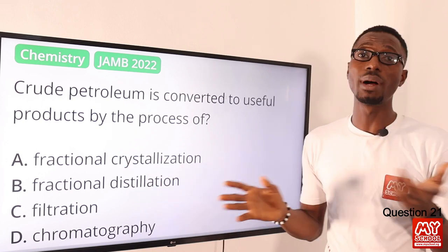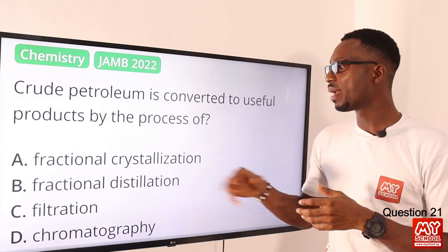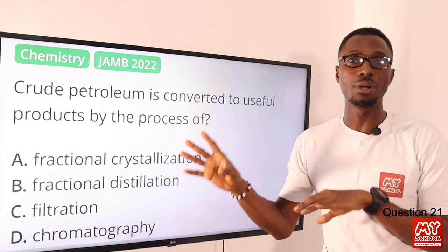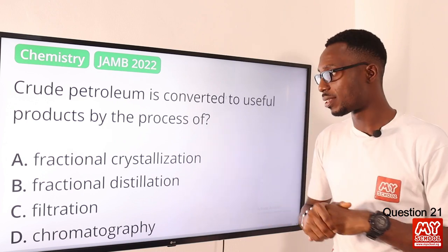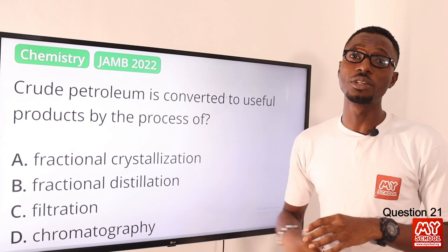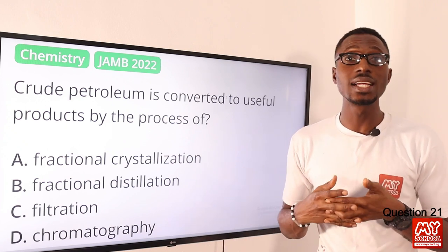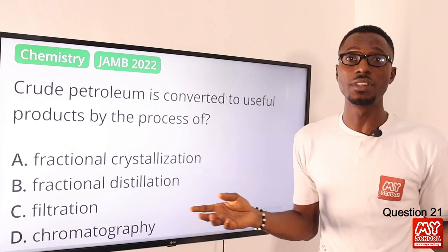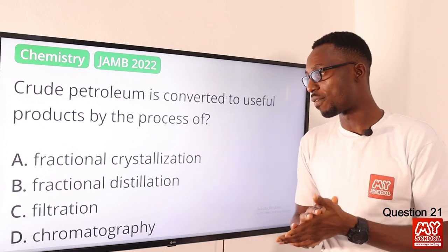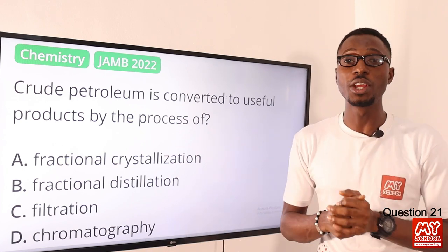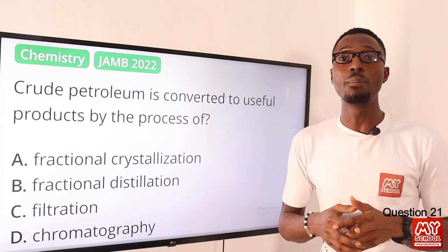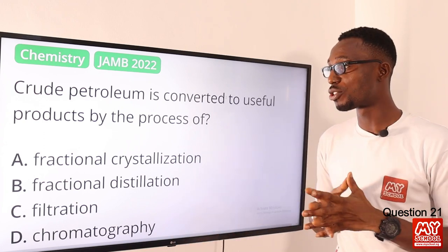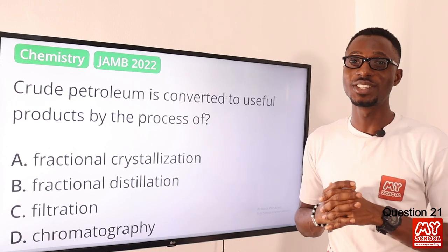Fractional crystallization is talking about solutes, and one thing that makes this process effective is when the solutes have different temperatures of their solubility in a given solvent. Then we have filtration — using your filter paper, for instance when you have chalk in water that does not completely dissolve, you can filter it off. Then we have chromatography, which is very useful when it comes to food testing, beverage testing, drug testing and so much more. So the correct option to this question is option B for fractional distillation.